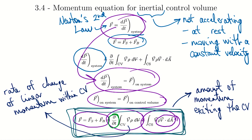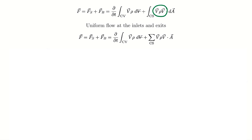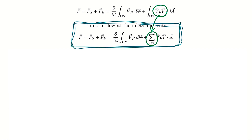We can also make simplifications to this equation. Integration is required anytime the terms within the integral are changing over the range being integrated. If we don't experience a change in velocity or density over the area — substituting an average value representative of the whole area — we don't need to integrate. This is common in engineering problems. We can simplify to the summation form for uniform flow at the inlets and exits.